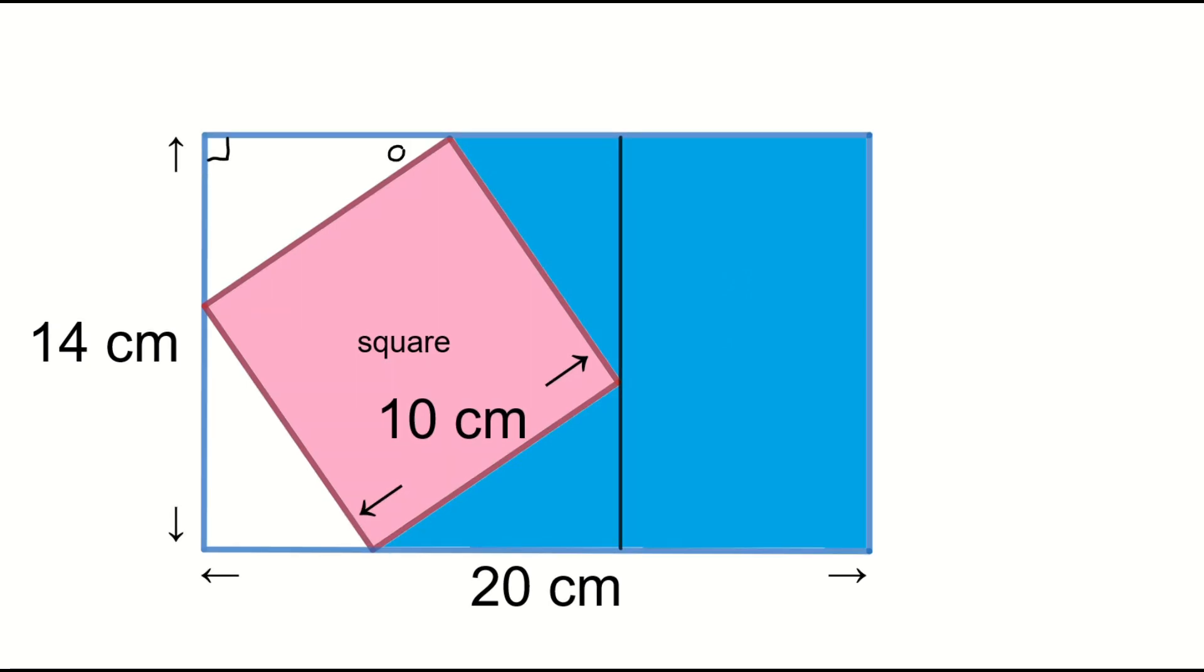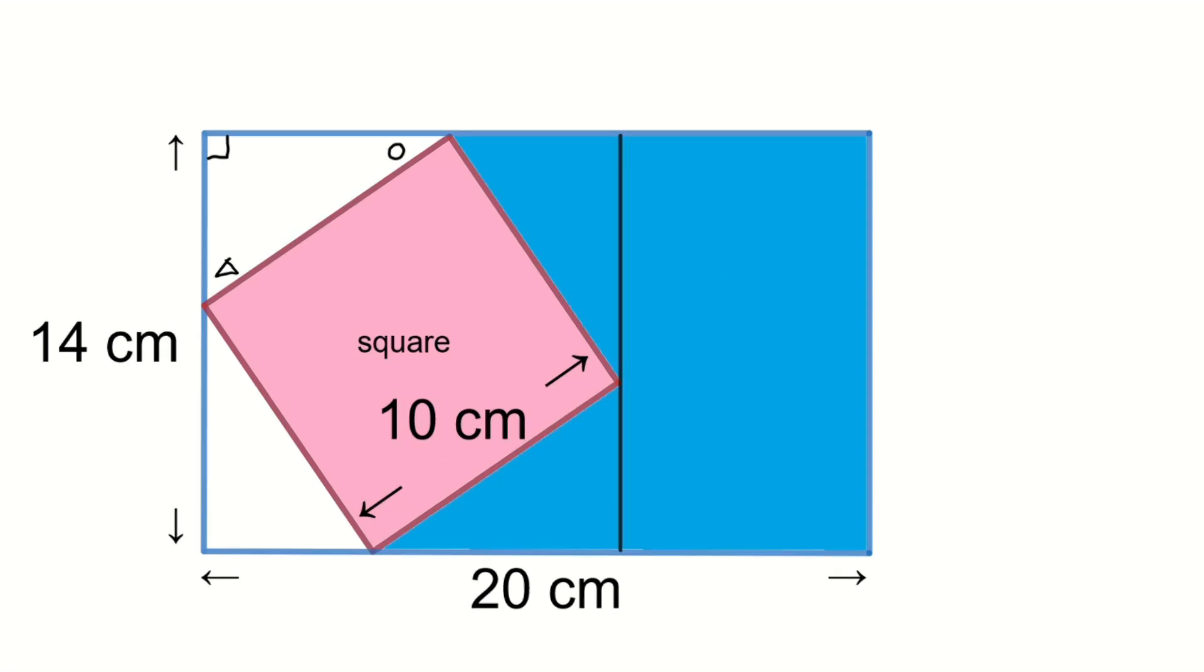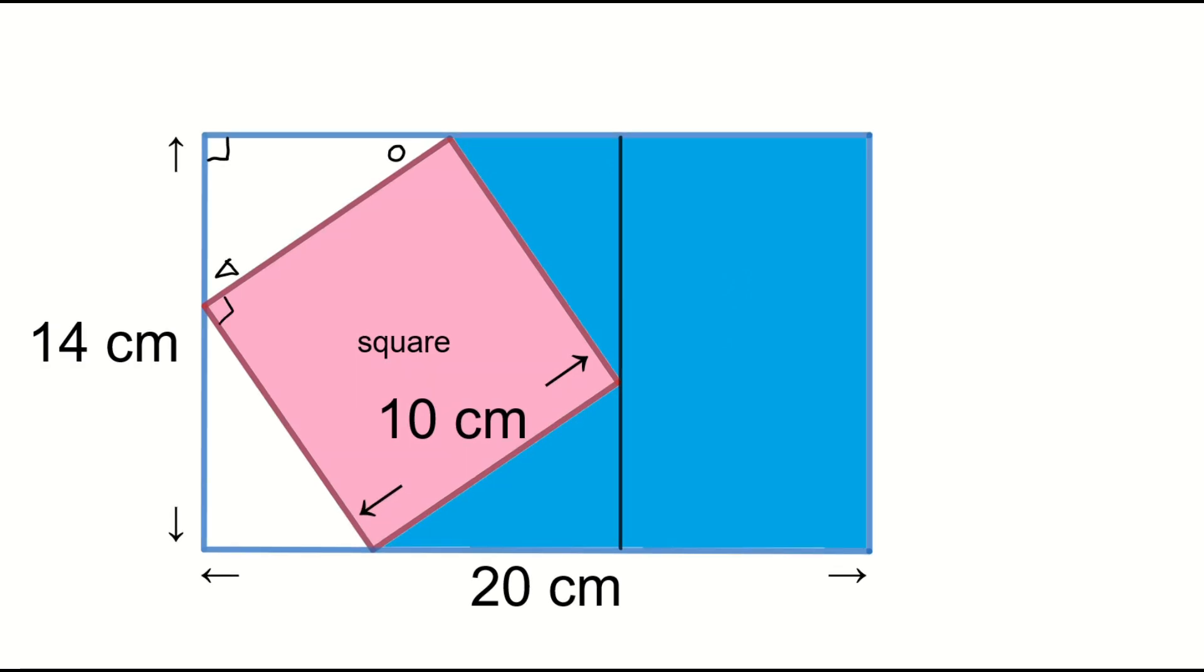Then, this angle represents as a circle, and this angle as a triangle. A circle plus a triangle equals 90 degrees. So, this angle is a circle, and this angle is a triangle.